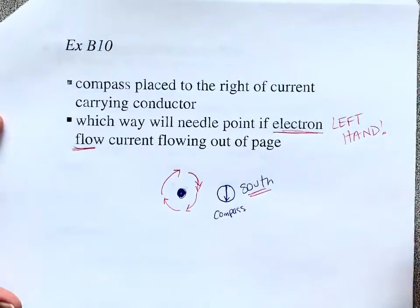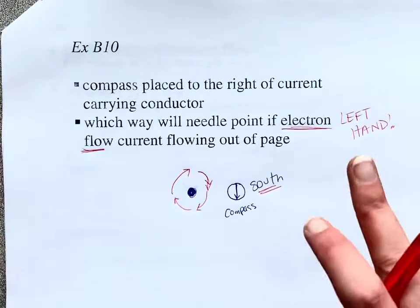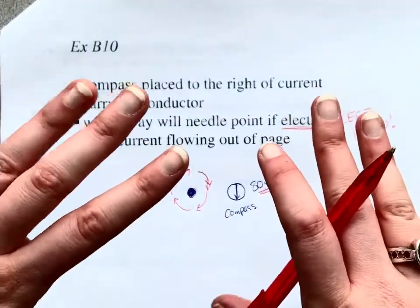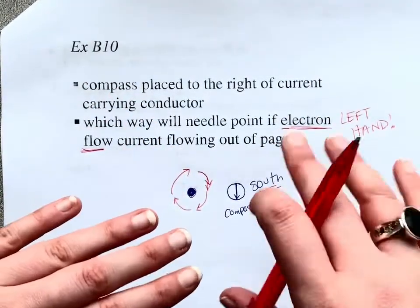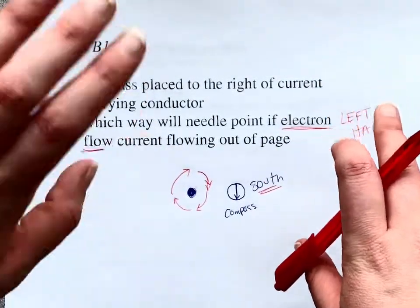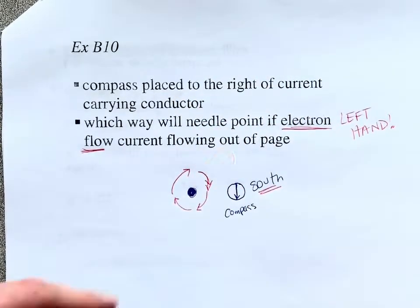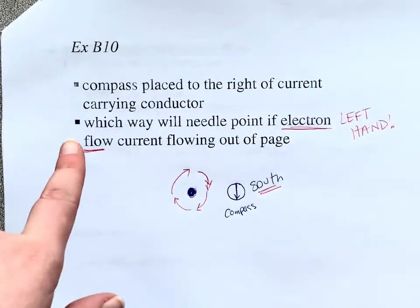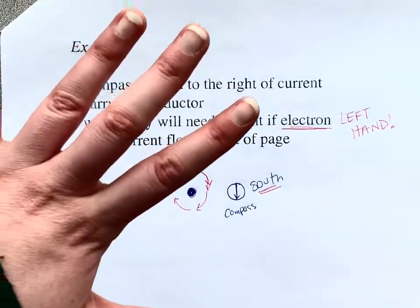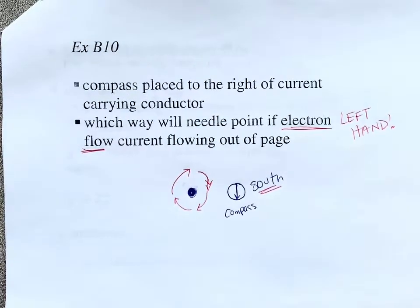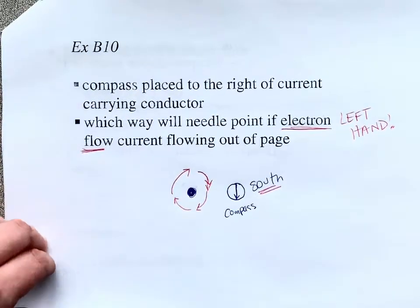Be really careful whether you're using your right hand or your left hand. If it just says 'current,' you're using your right hand. If it says 'electron flow,' then you're using your left hand.